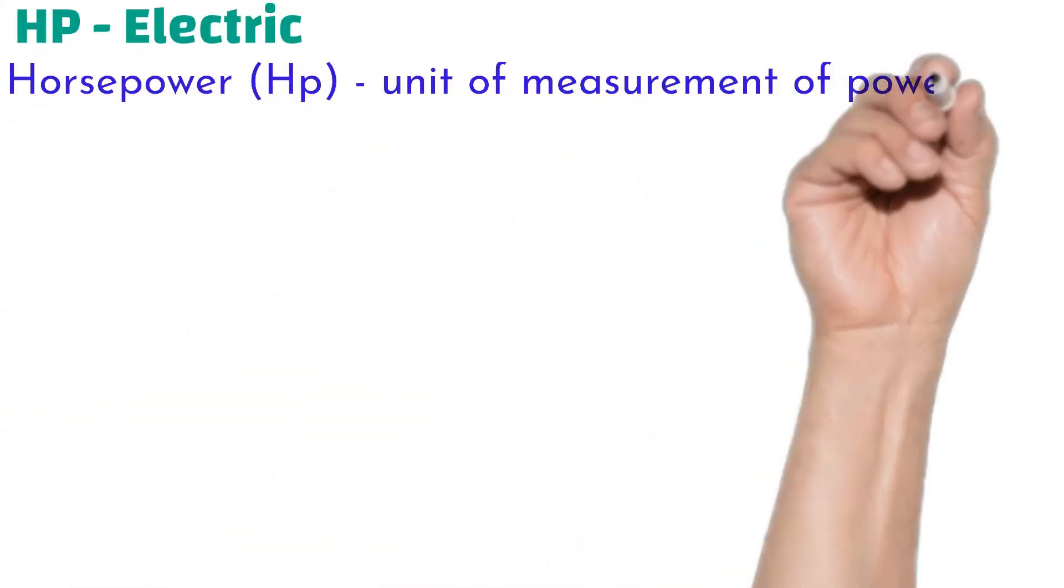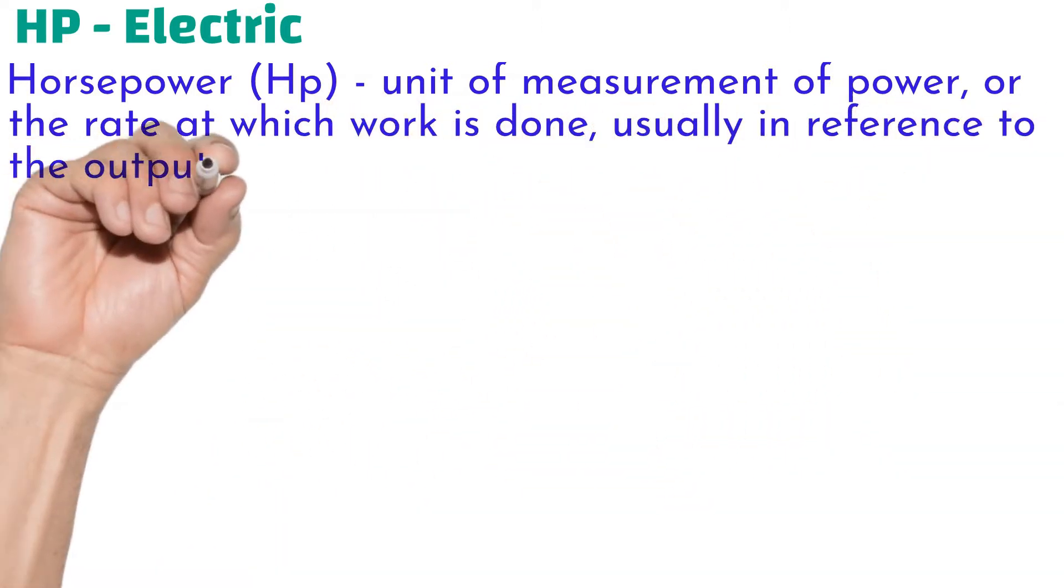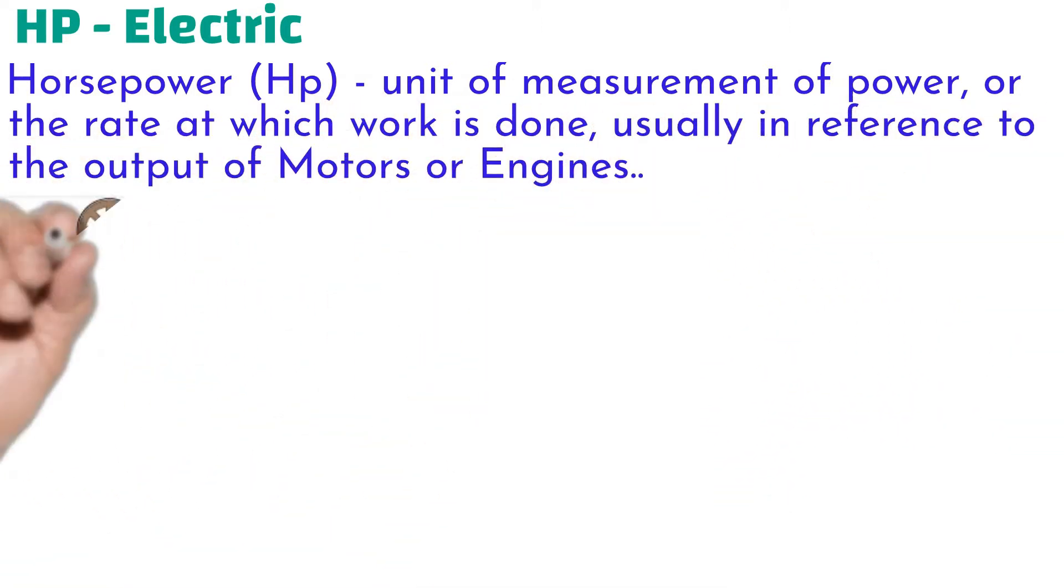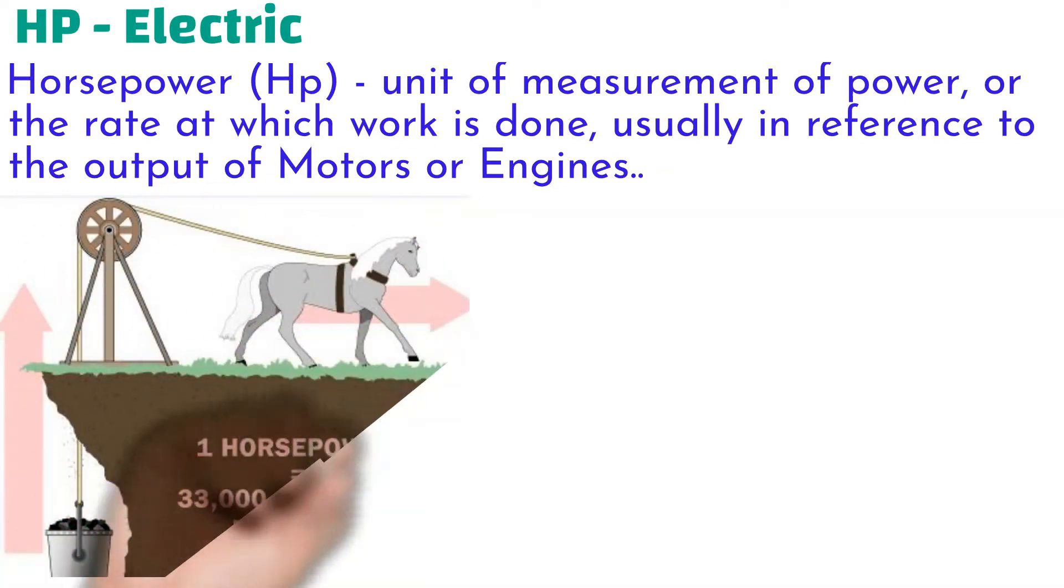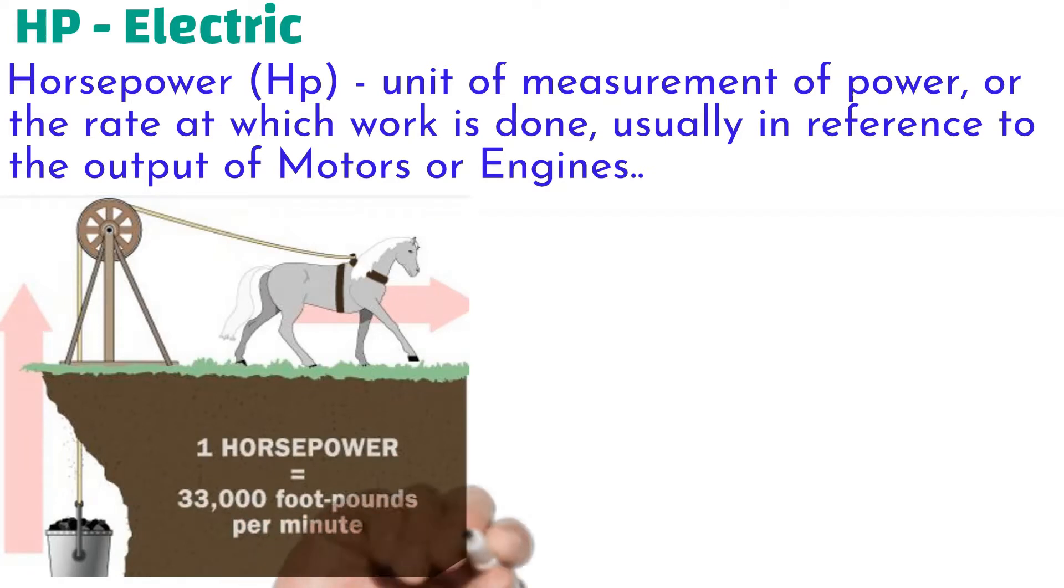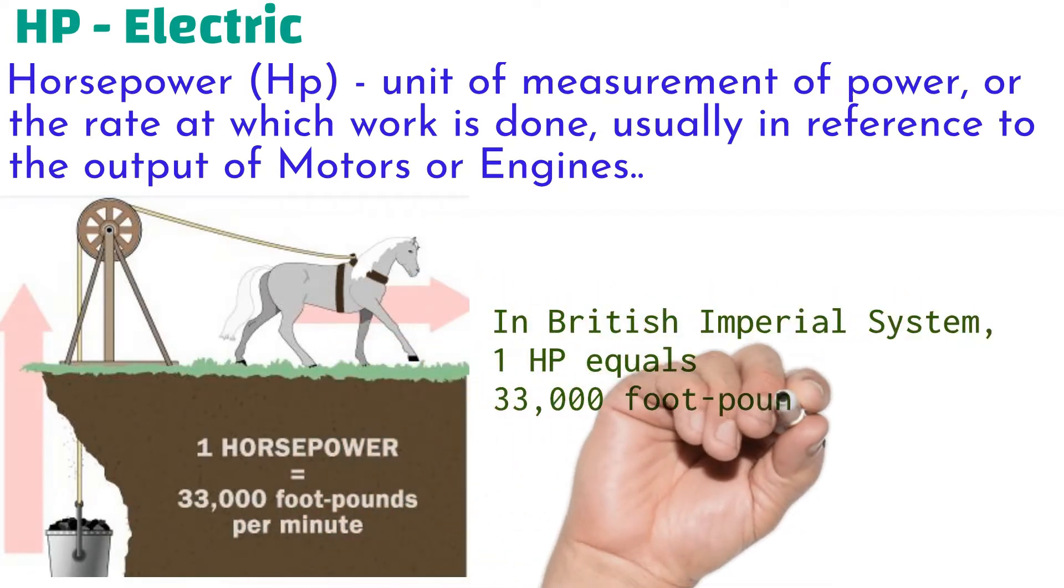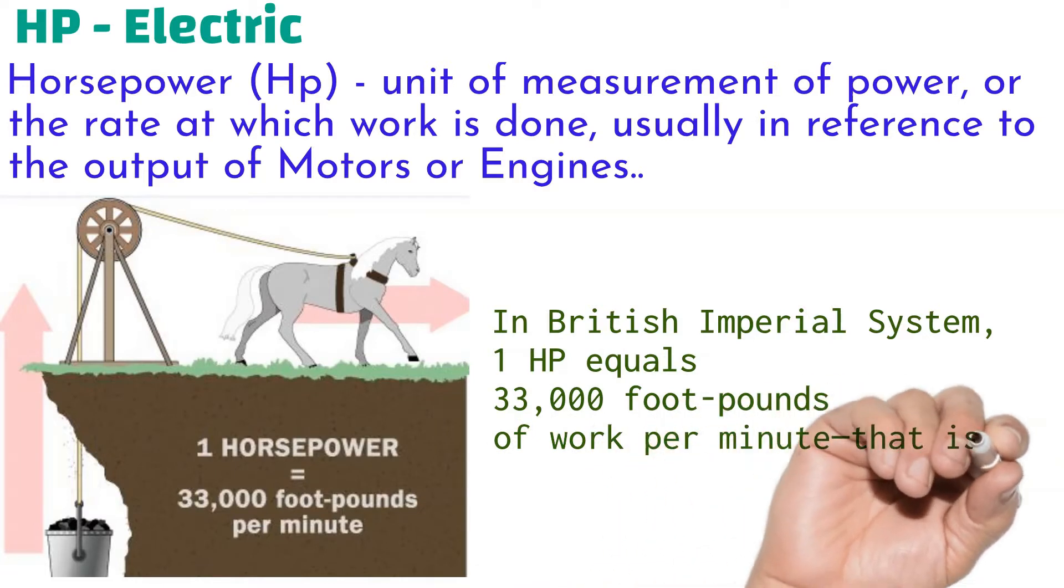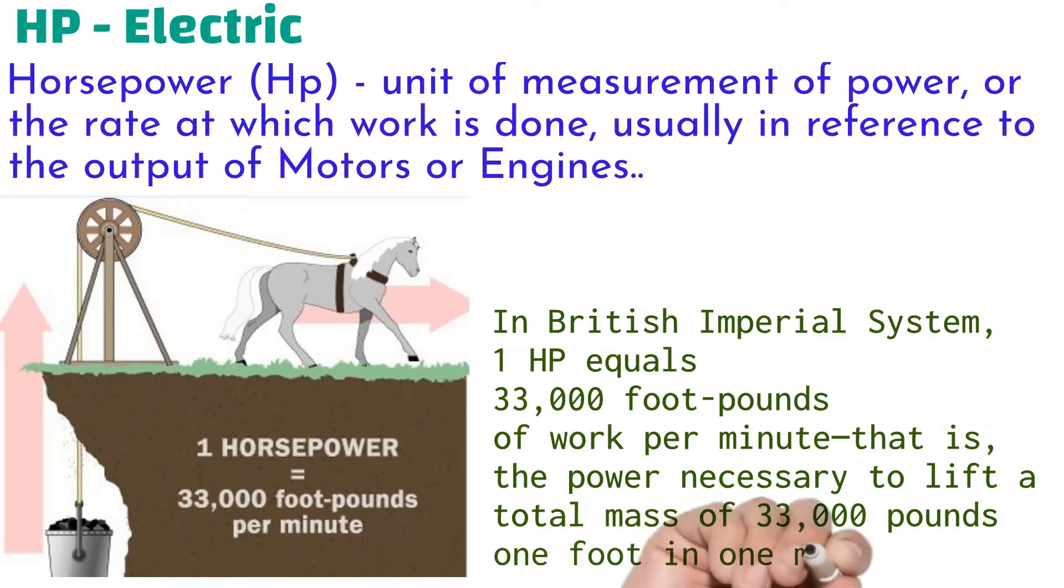What is horsepower in electric? Horsepower is basically unit of measurement of power or the rate at which work is done, usually in reference to the output of motors or engines. In British imperial system, one horsepower equals 33,000 foot-pounds of work per minute. That is the power necessary to lift a total mass of 33,000 pounds one foot in one minute.